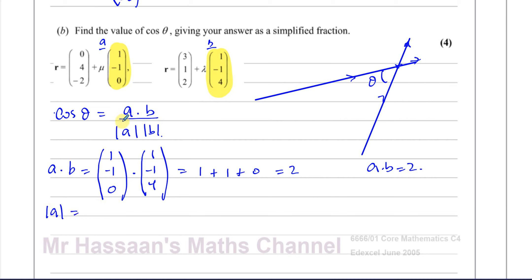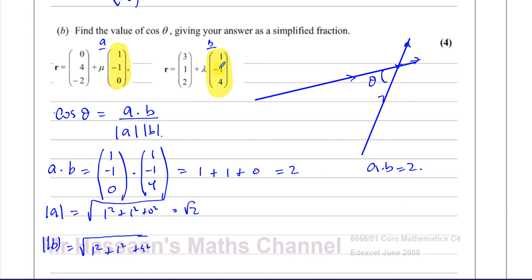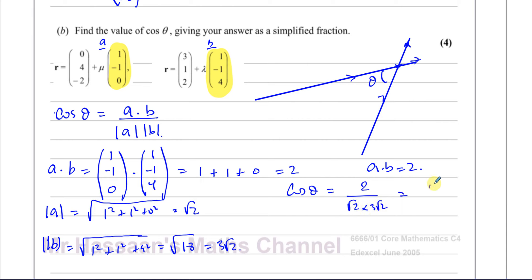The magnitude of A = √(1² + 1² + 0²) = √2. The magnitude of B = √(1² + 1² + 4²) = √18 = 3√2. Therefore cos θ = 2 / (√2 × 3√2) = 2 / (3 × 2) = 1/3.